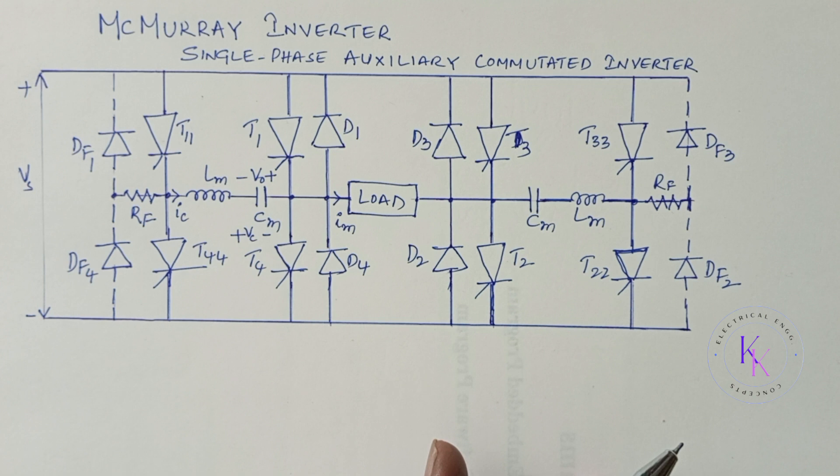Fast switching thyristors which are available in high voltage and high current ratings are more suitable for high power applications. However, thyristor requires extra commutation circuits for turn-off and the various techniques for thyristor commutation are discussed earlier in the previous videos. The link is given in the description, please go through it.